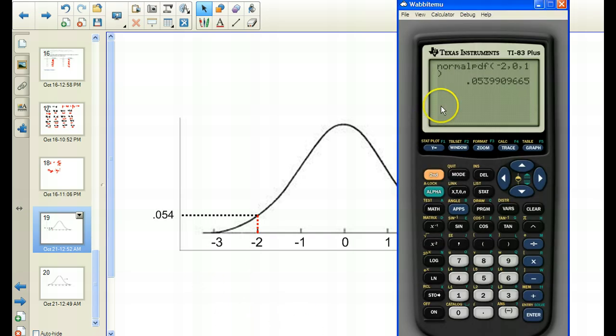So normal PDF gets the height above this first value when the bell curve has a mean of this and a standard deviation of this.